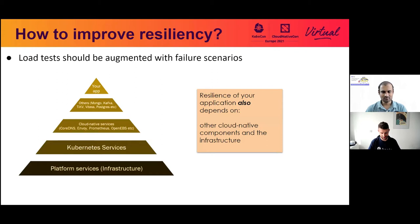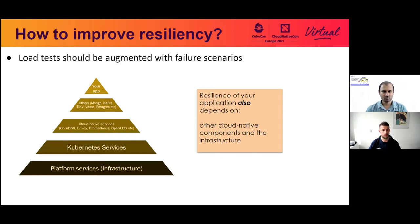Thanks for setting the context. Now that we've spoken about chaos and the need to test it before deploying in production, let's look at why chaos engineering is important. Load tests and functional tests are great, but they need to be augmented with failure scenarios — especially in a cloud-native world where everything is in the form of a microservice, everything is loosely coupled, and there are so many points of failure. It is important to test what happens when the components surrounding your applications fail.